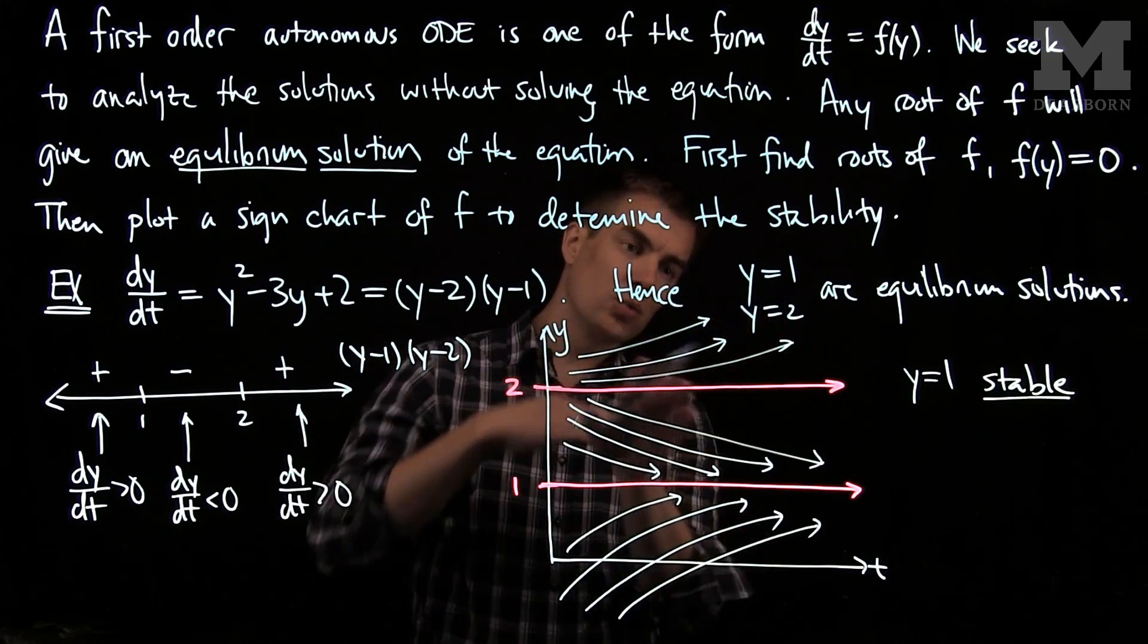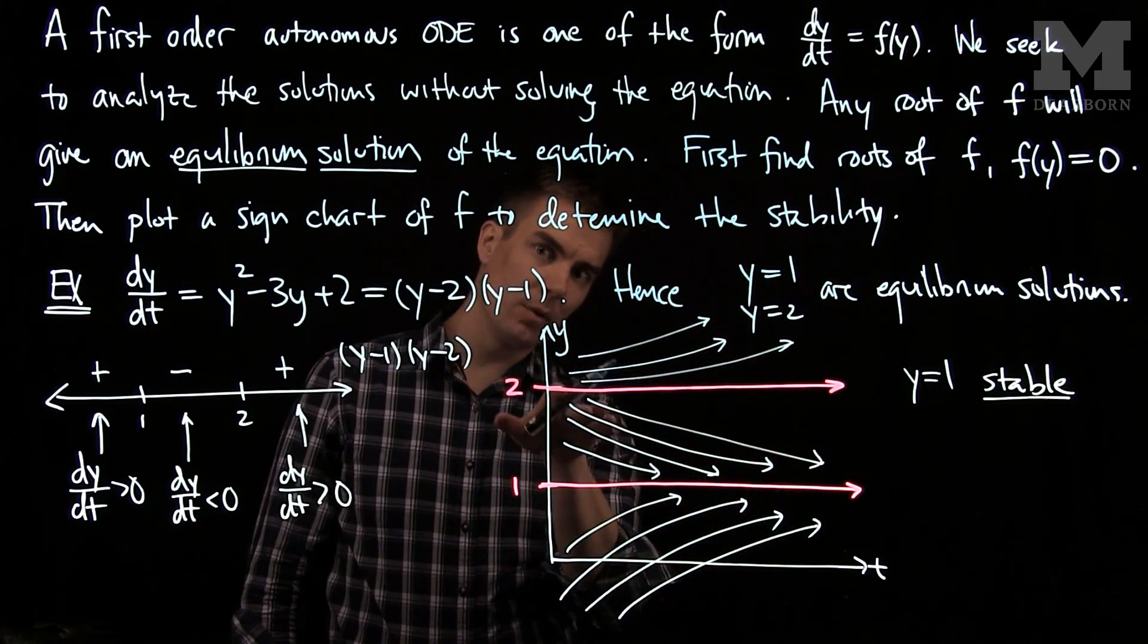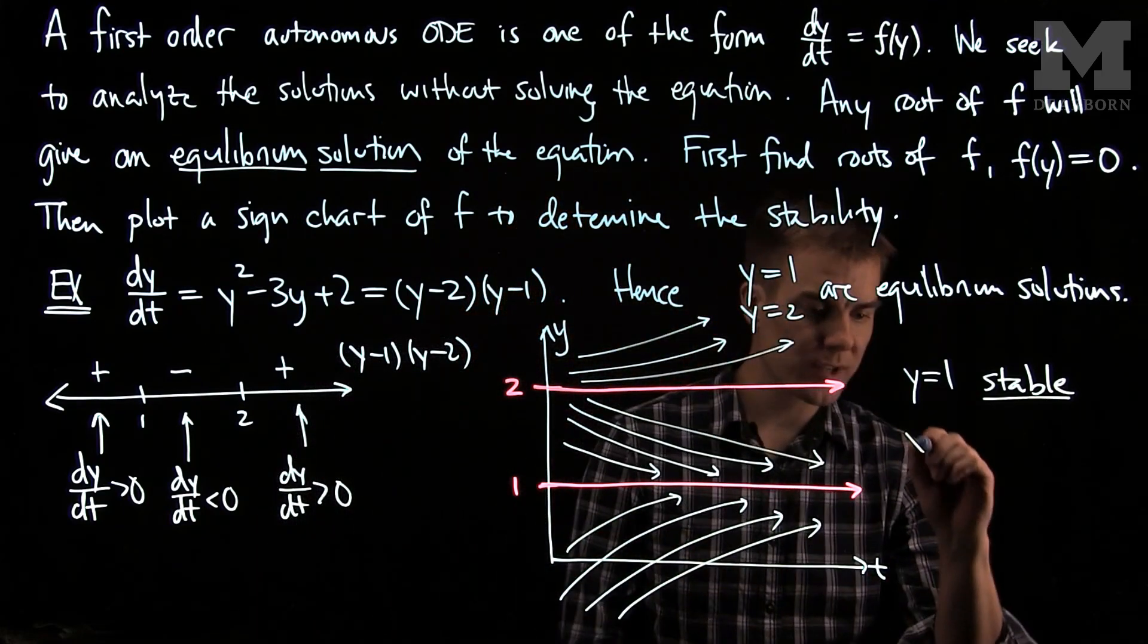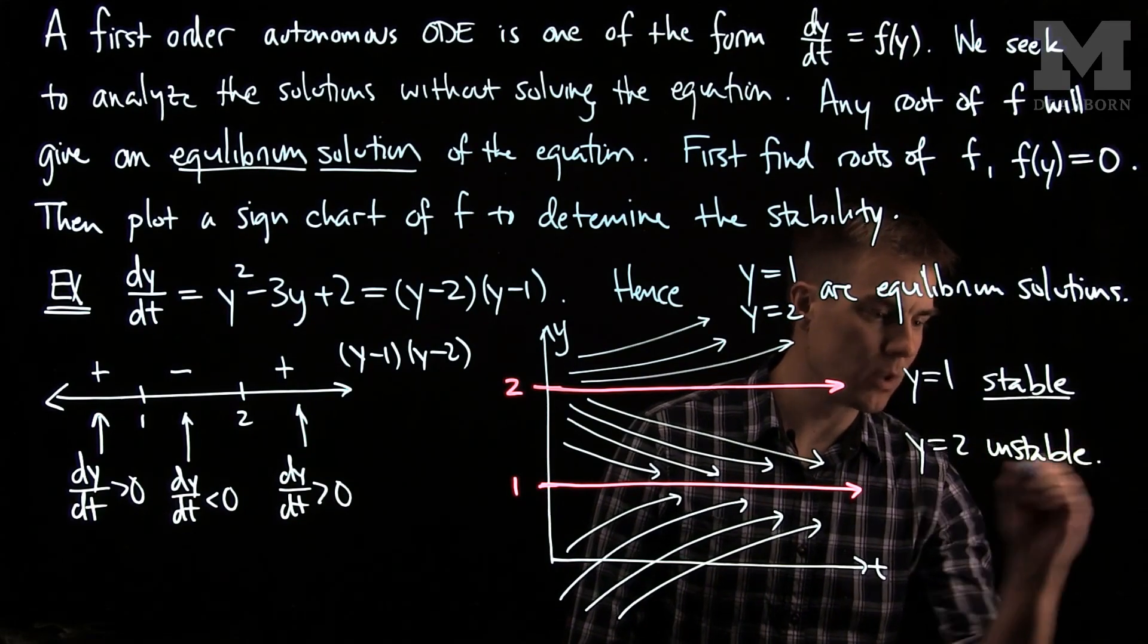Similarly, solutions will diverge from y = 2. If they start above 2, they will drift away from 2. If they start below 2, they will drift away from 2. So we will say that y = 2 is an unstable equilibrium.